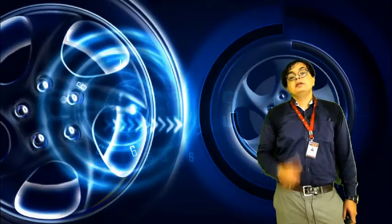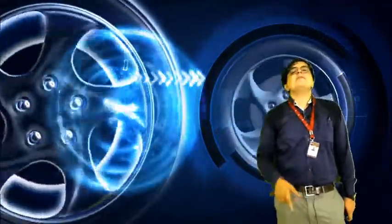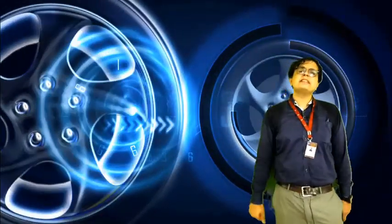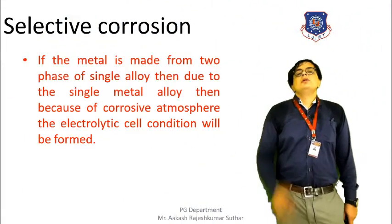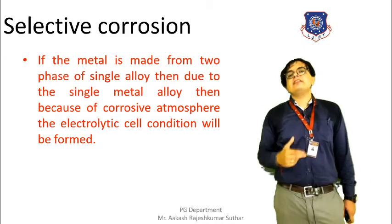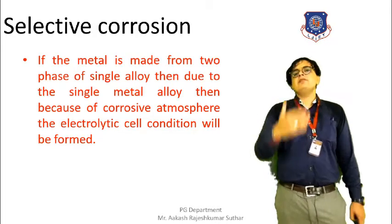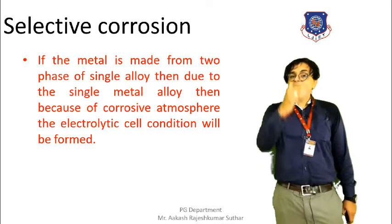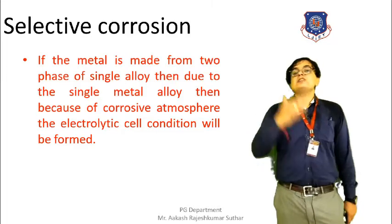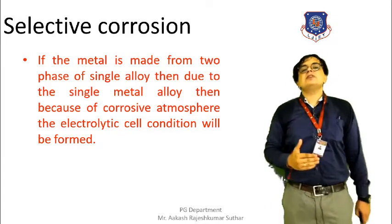Moving to the next type — selective corrosion. From the figure, you can see alloy wheels. In selective corrosion, the alloy is the key component. When a metal is made of two phases in a single metal alloy, a corrosion environment will form around that metal. The metal having two alloys which is exposed to a corrosive environment will be at risk of corrosion.